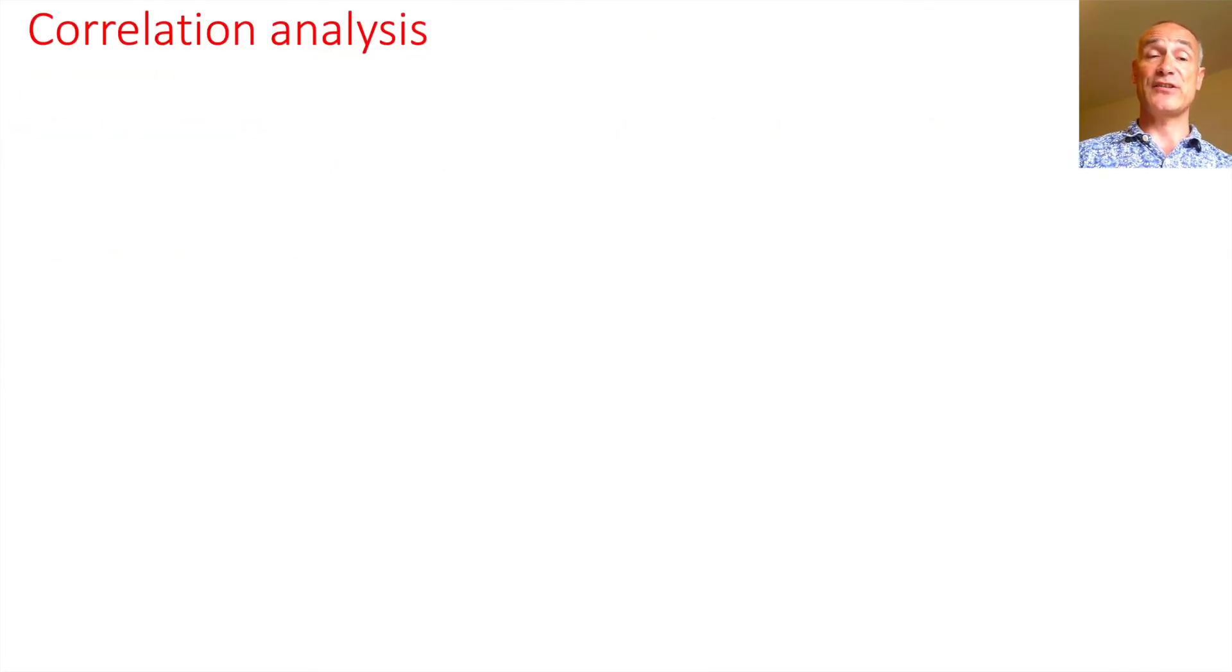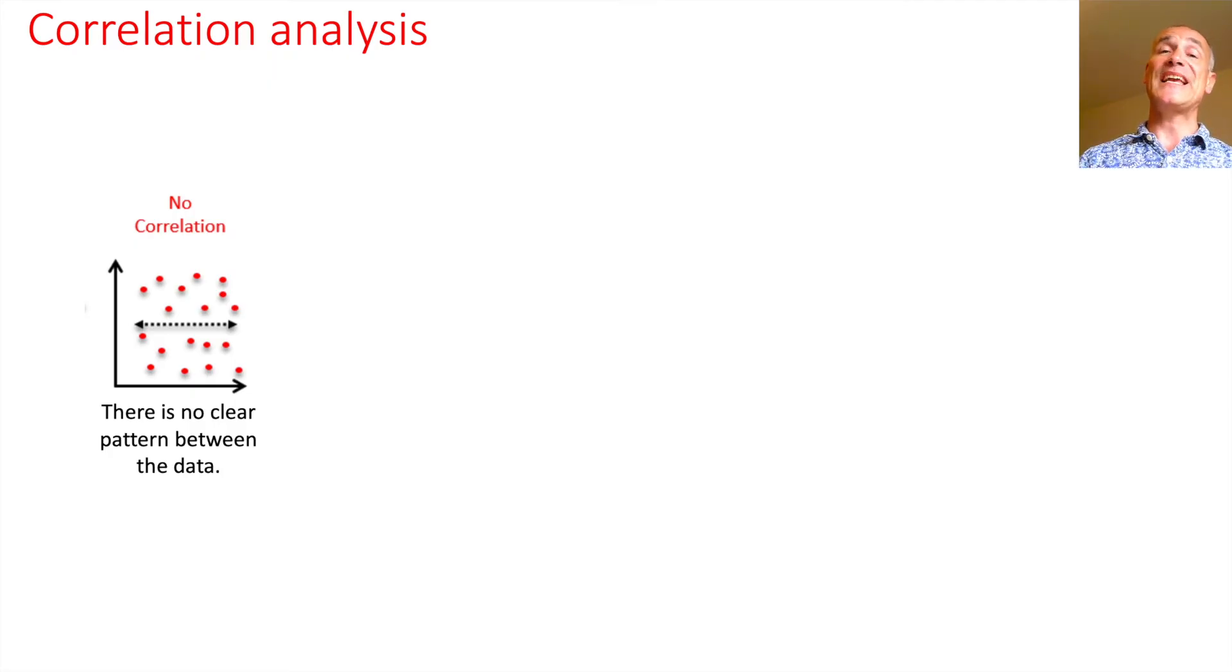We're going to quickly look at correlation analysis. Now, when we're talking about correlation, we're looking, is there a relationship between what we plot on our x-axis and what we plot on our y-axis? And how strong is that relationship, that correlation? Here we can see that there's no correlation between either data. There's no link at all, as far as we know.